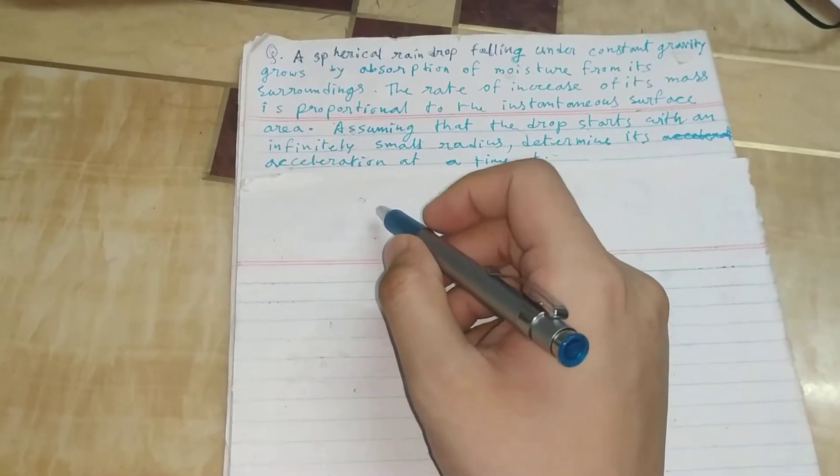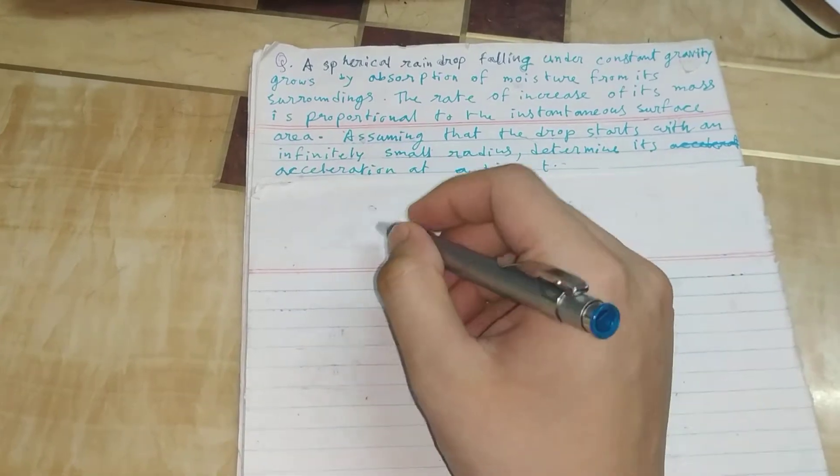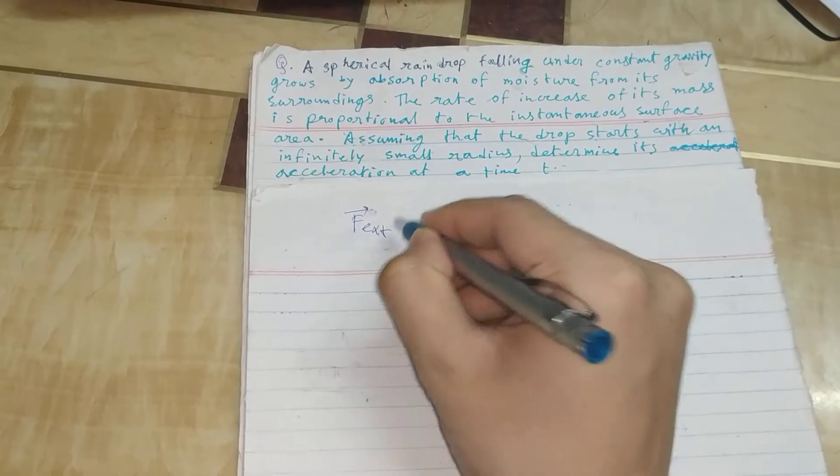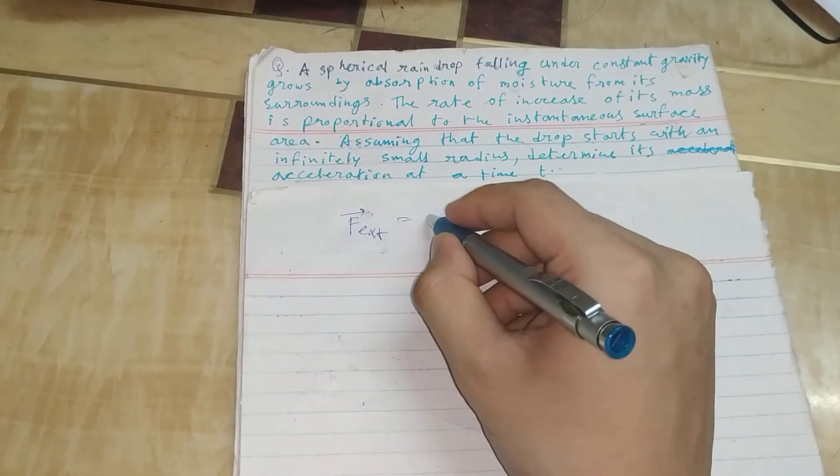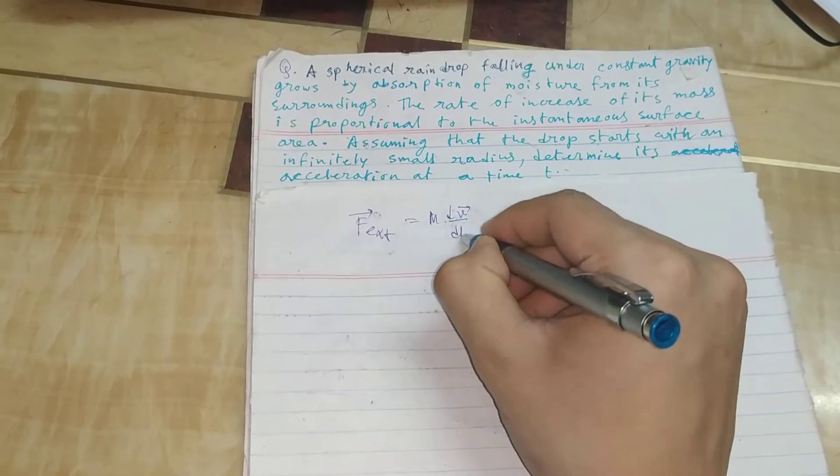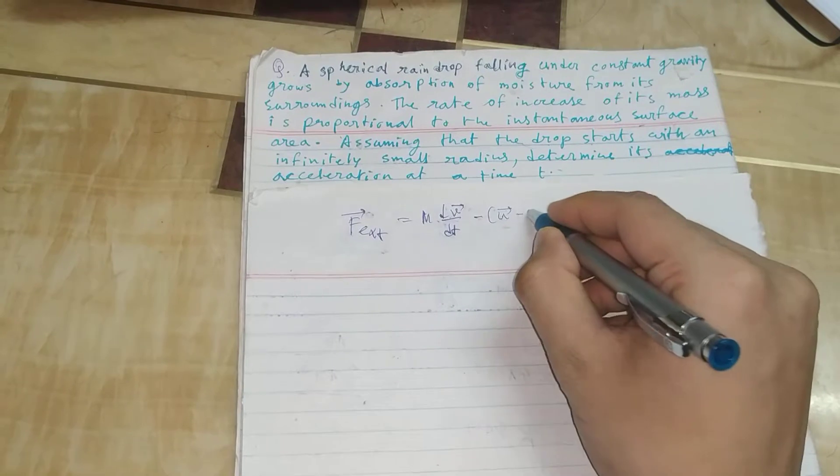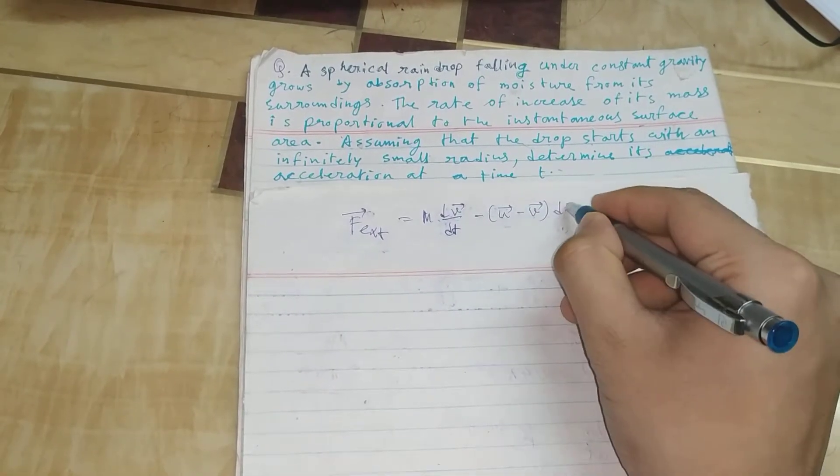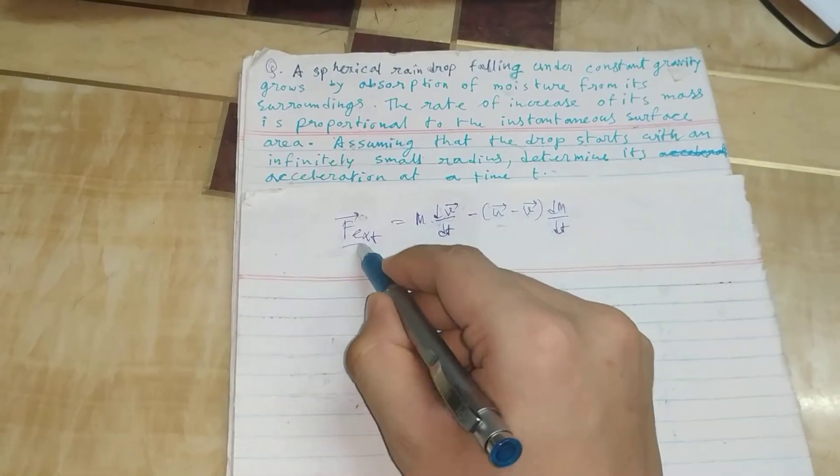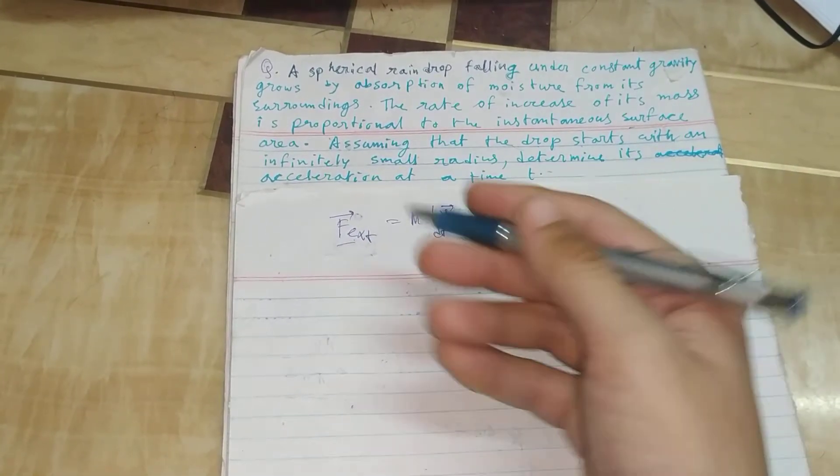This is clearly a problem of a variable mass system, so we know the equation of motion of a variable mass system. The general equation is F_ext = d(mv)/dt + u(dm/dt), where this term is the external force.